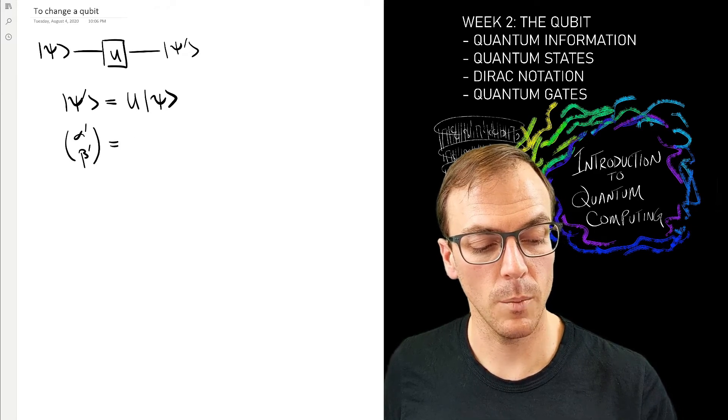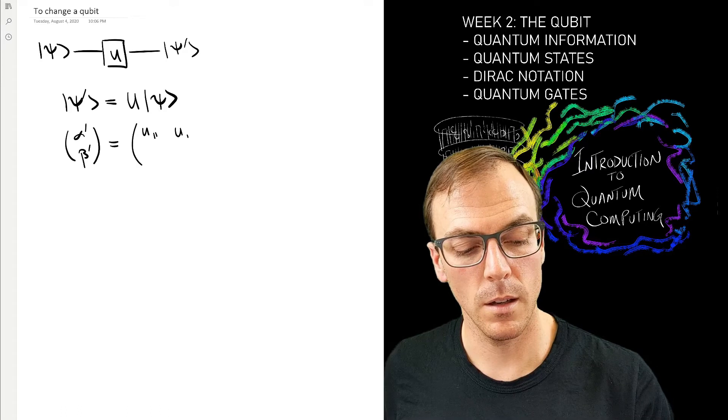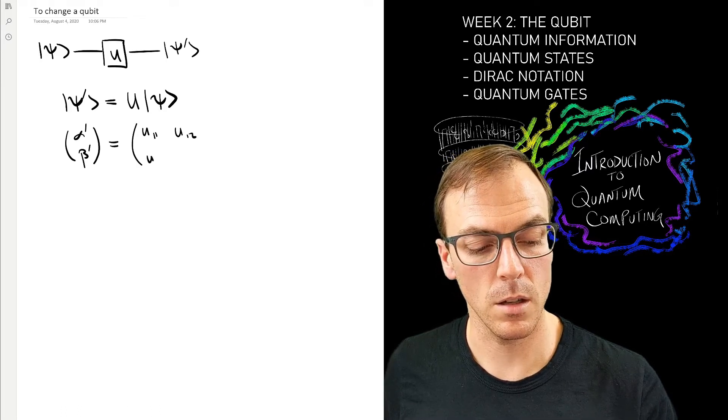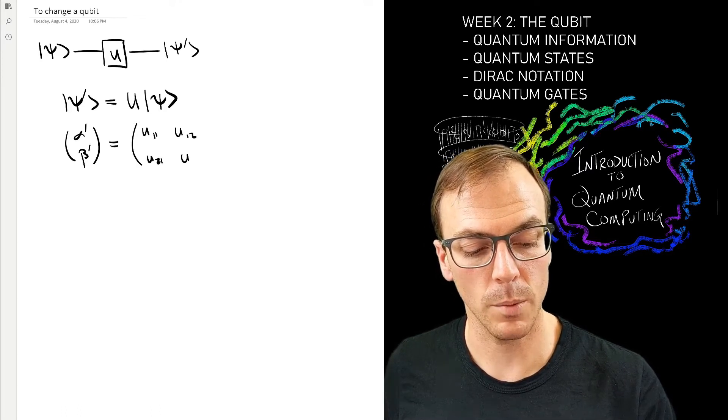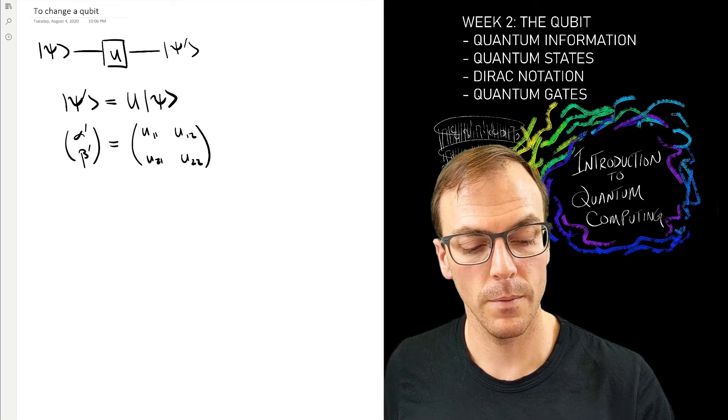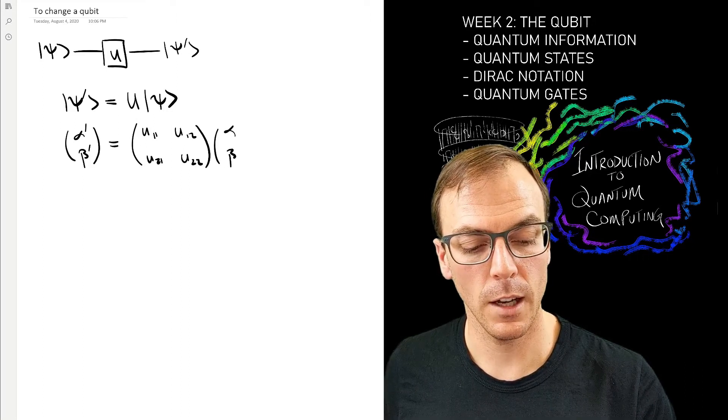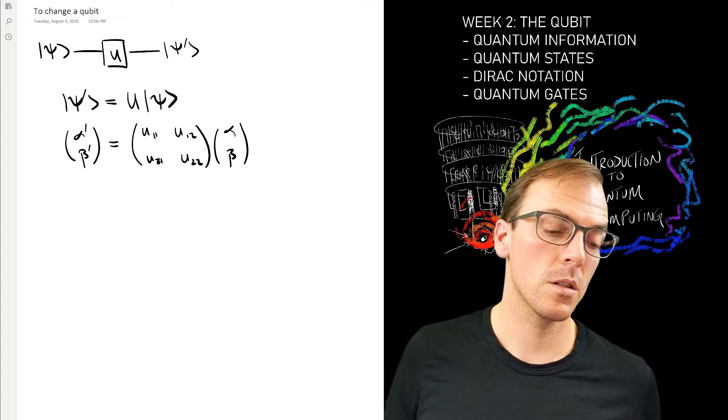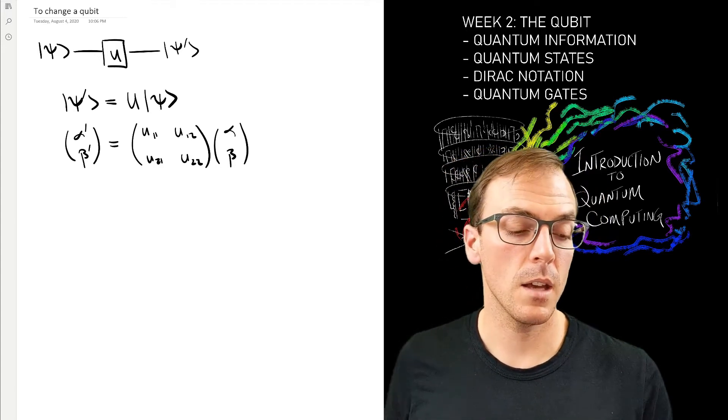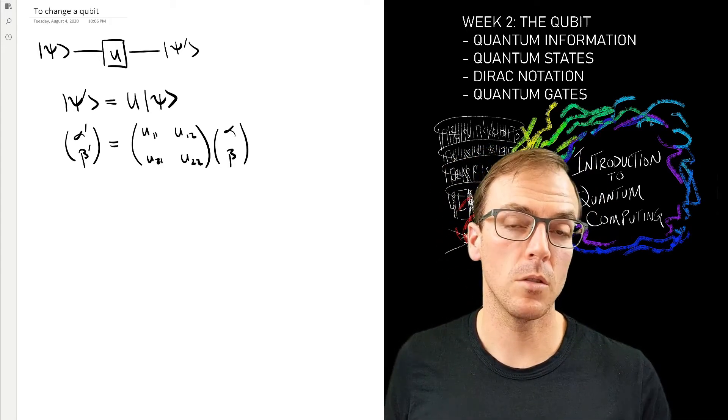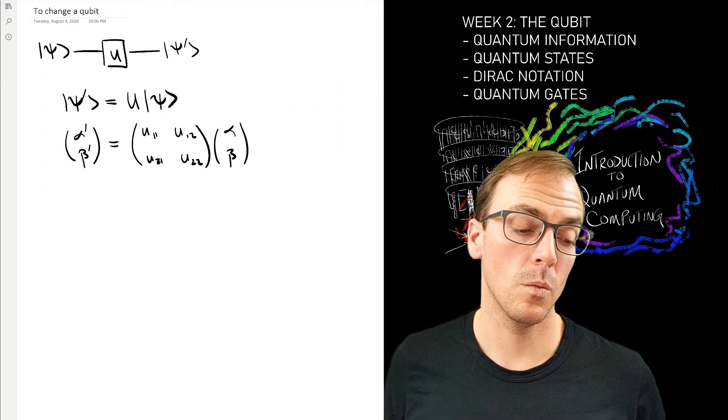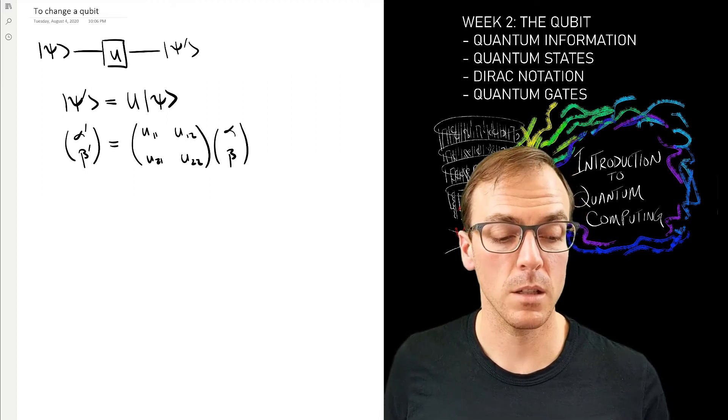Looking back at your usual linear algebra, it's just standard matrix multiplication. I have my two-dimensional complex vectors—those are my states—and then how I change them into new vectors is with this matrix U.